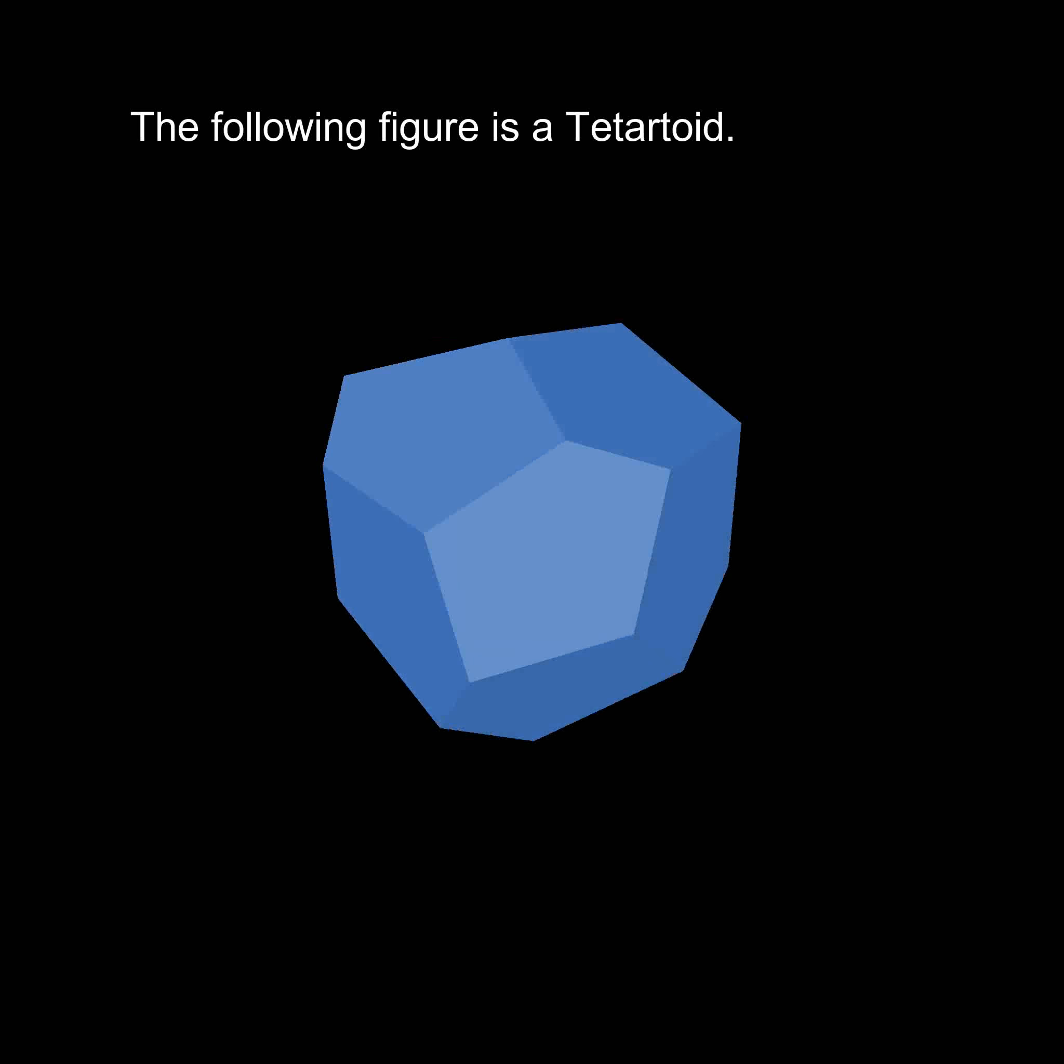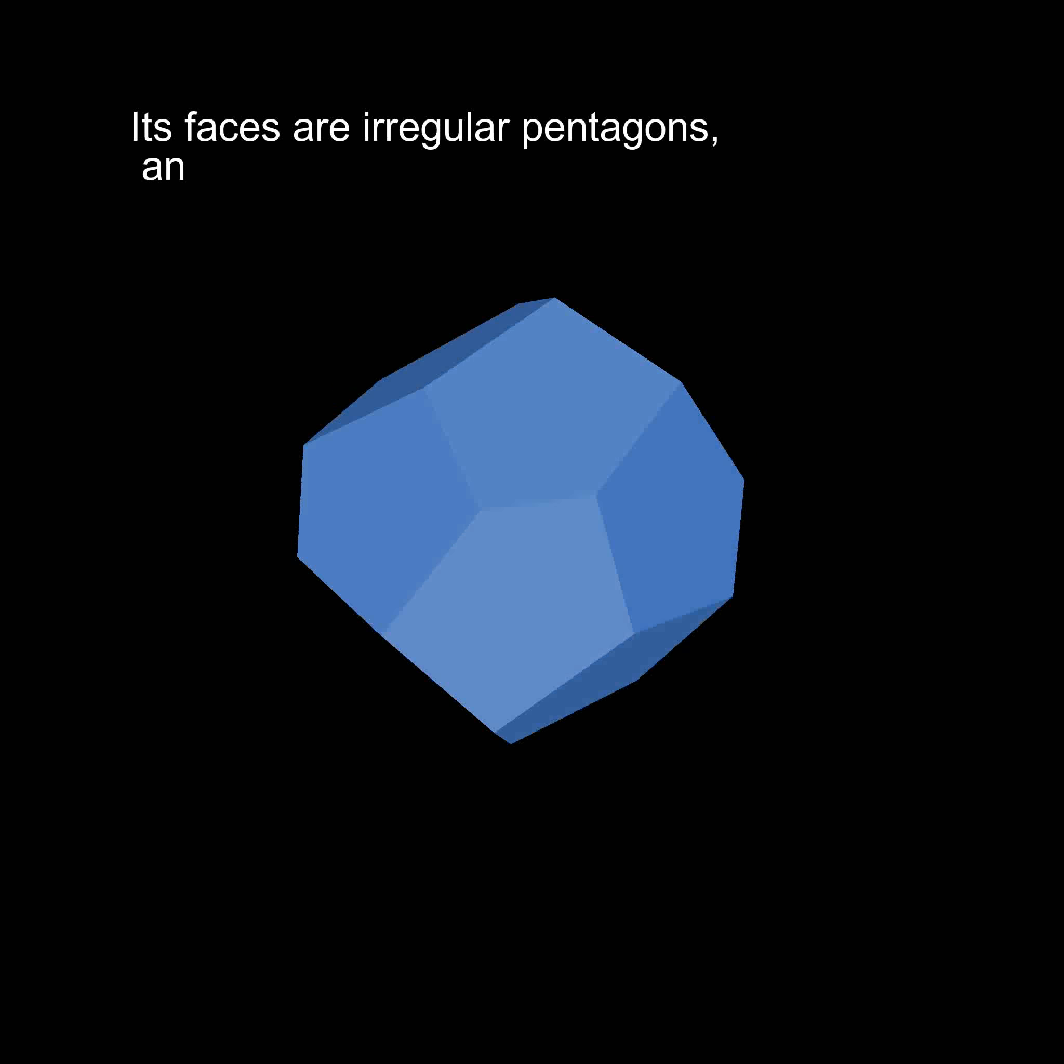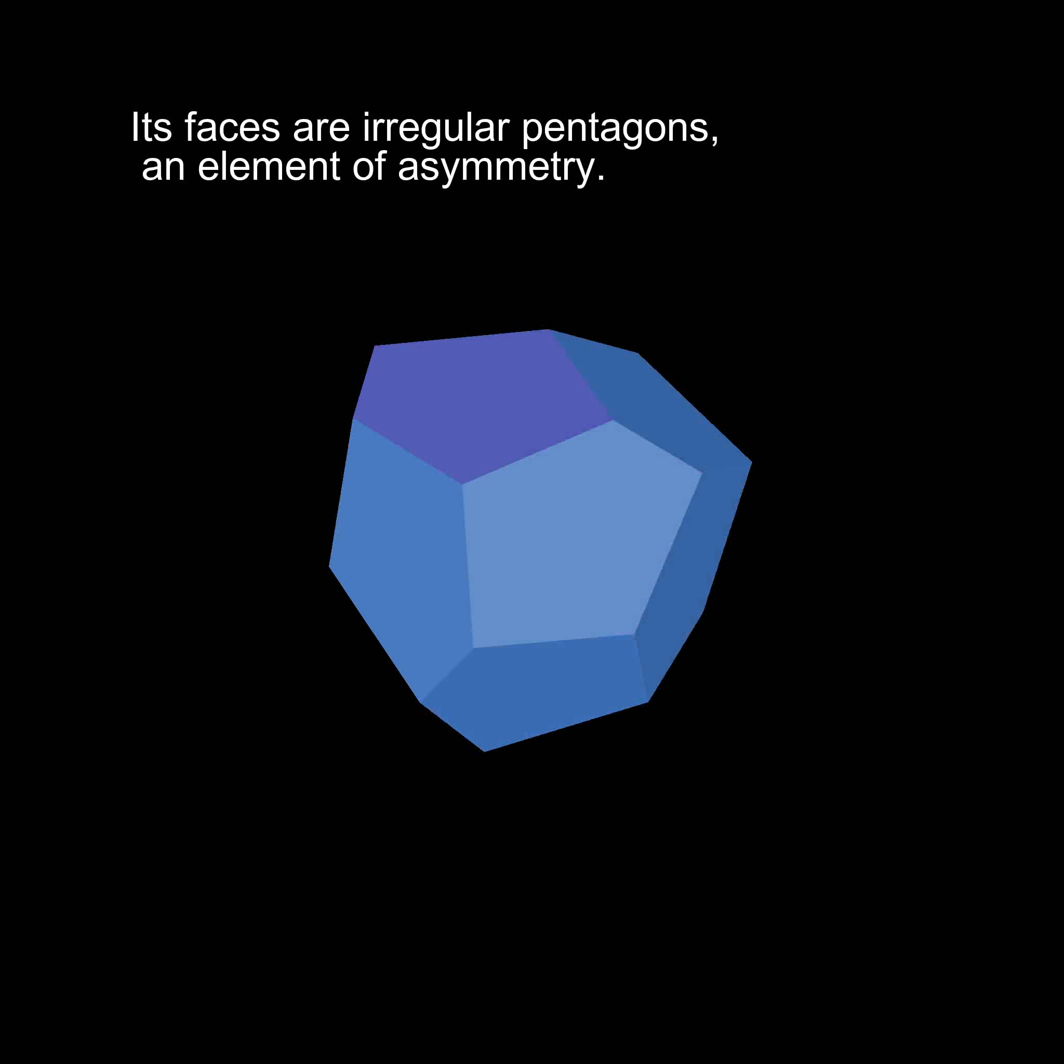The following solid is called a tetartoid. All its faces are irregular pentagons, an element of asymmetry.